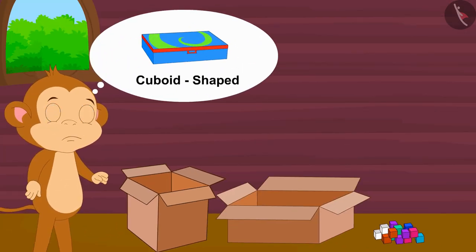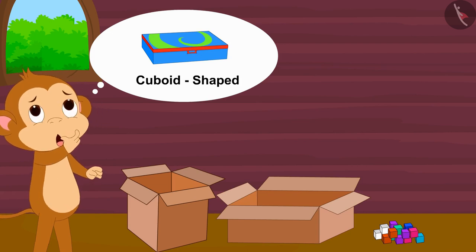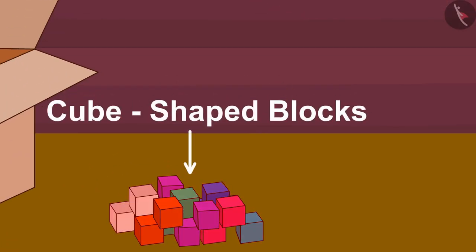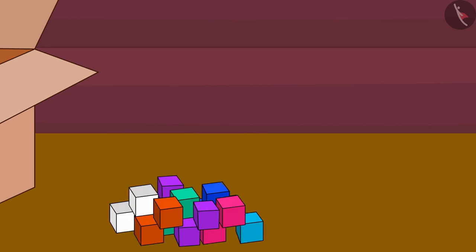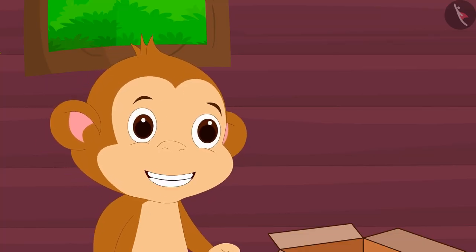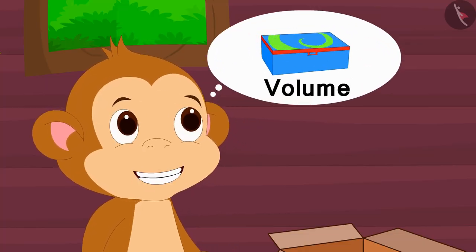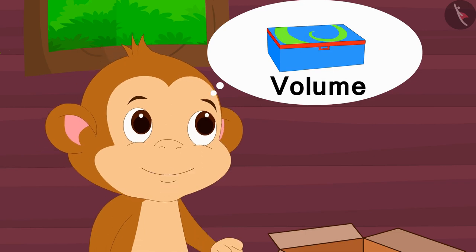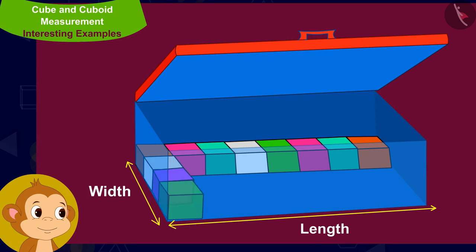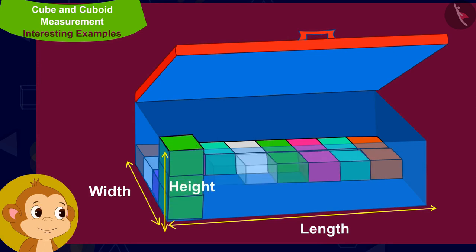Babban began to think about how many compass boxes he would be able to carry in these two boxes. He had a few cube shaped blocks of one centimeter each that he had bought from Gaggu's shop. He decided to use these cubes to find the volume of a compass box, and began measuring its length, width, and height.